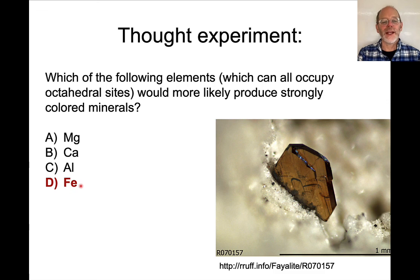And the answer is iron. Iron is the only transition metal out of these elements. And here's an example of fayalite, which is an iron-rich olivine.